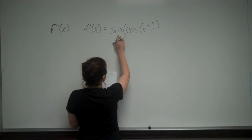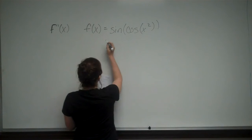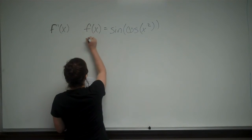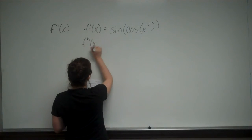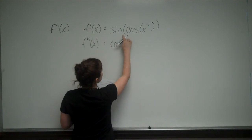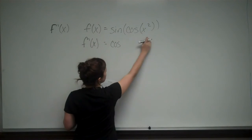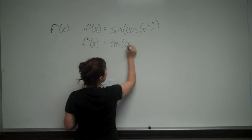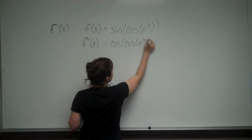We first need to take the derivative of sine. So we're finding f prime. The derivative of sine is cosine. Remember, we're taking cosine of whatever is inside, so cosine of cosine of x squared.